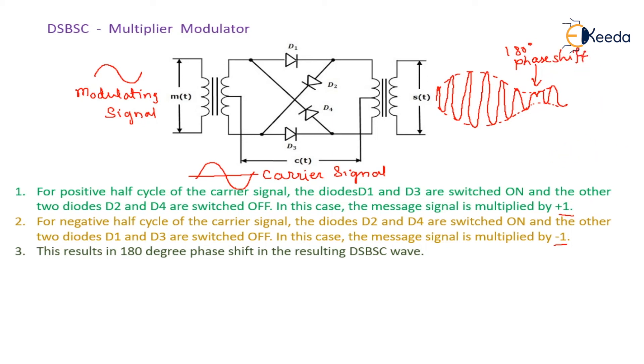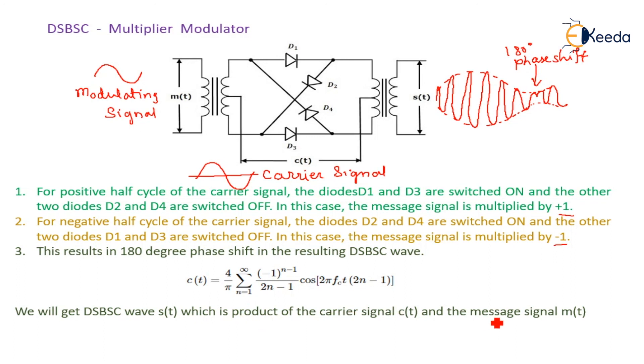So here in this circuit, both carrier and the modulating signal are multiplied. So here carrier signal, it is 4 by pi, summation of n equal to 1 to infinity, minus 1 raised to power n minus 1, over 2n minus 1, cos of 2 pi fc t into 2n minus 1. We will get a DSBSC wave of s of t, which is a product of the carrier and the message signal M of t.